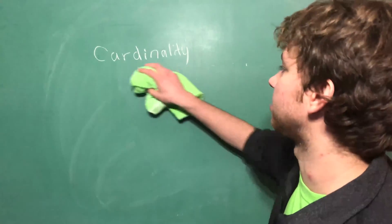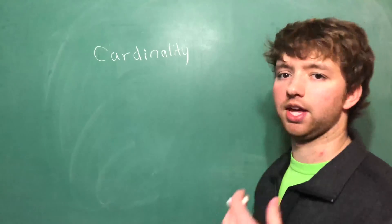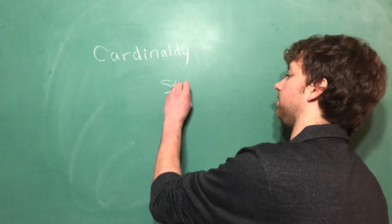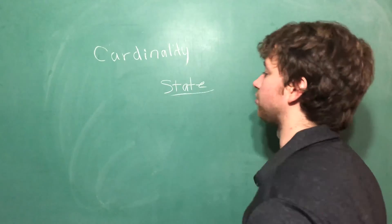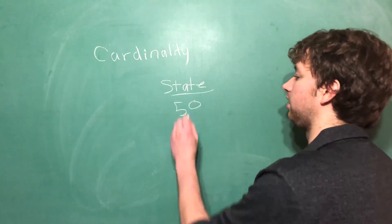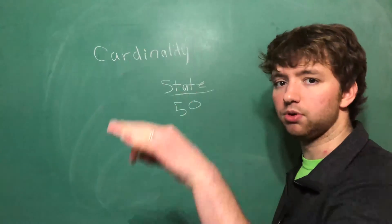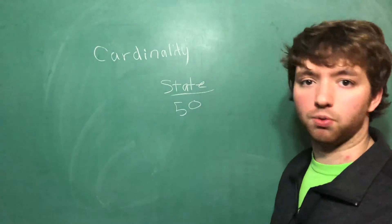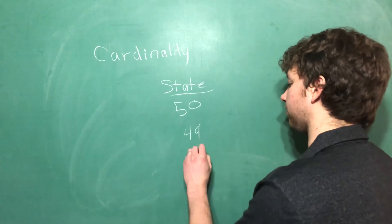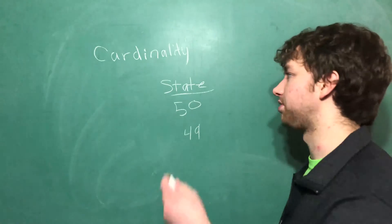Sometimes things aren't binary though and they have more options. For example if we had information about where someone lives, one of the features could be their state and this would have the cardinality of 50. But if we took all of the people and no one lived in Hawaii for example, then our cardinality for our data set would be 49 for that particular feature.